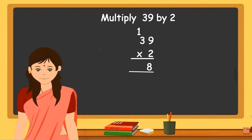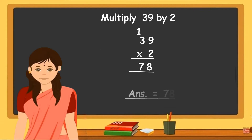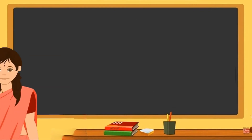Then multiply 2 into 3, which is equal to 6. Add the carry over 1, which is equal to 7. Write 7 in the tens place of the product. The answer is 78.